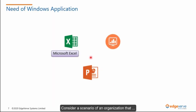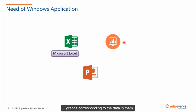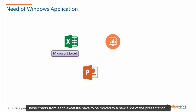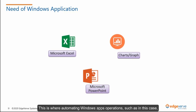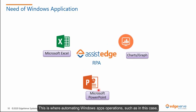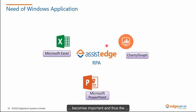Consider a scenario of an organization that deals with a lot of computational data. The data is stored in Excel files containing graphs corresponding to the data in them. These charts from each Excel file have to be moved to a new slide of the presentation using the PowerPoint application. This is where automating Windows app operations — such as moving the required chart from the Excel file to a new slide using Microsoft PowerPoint — becomes important.